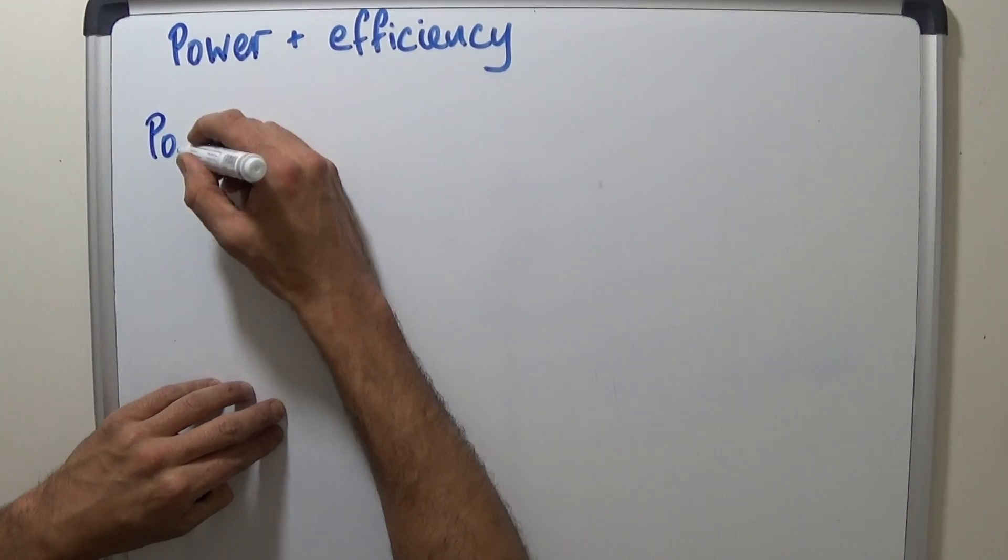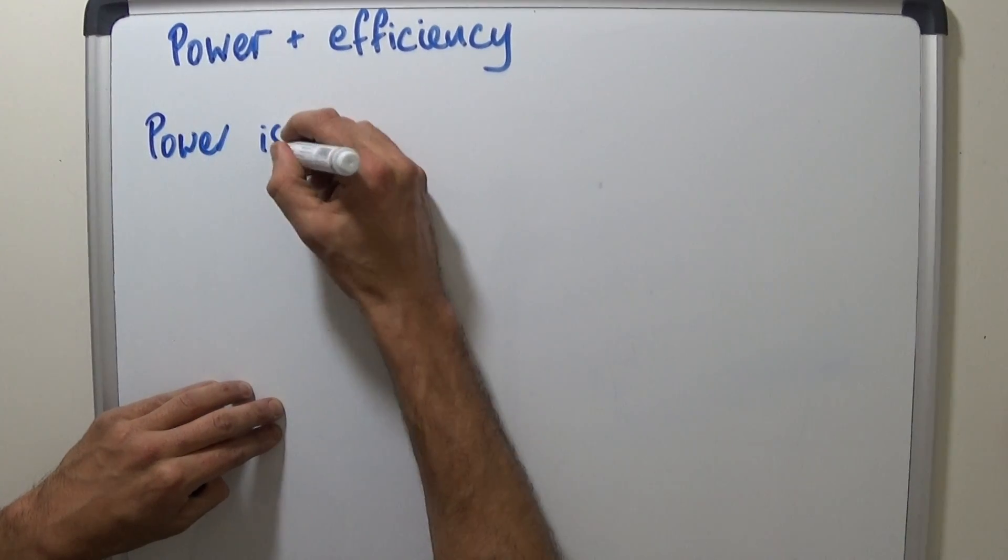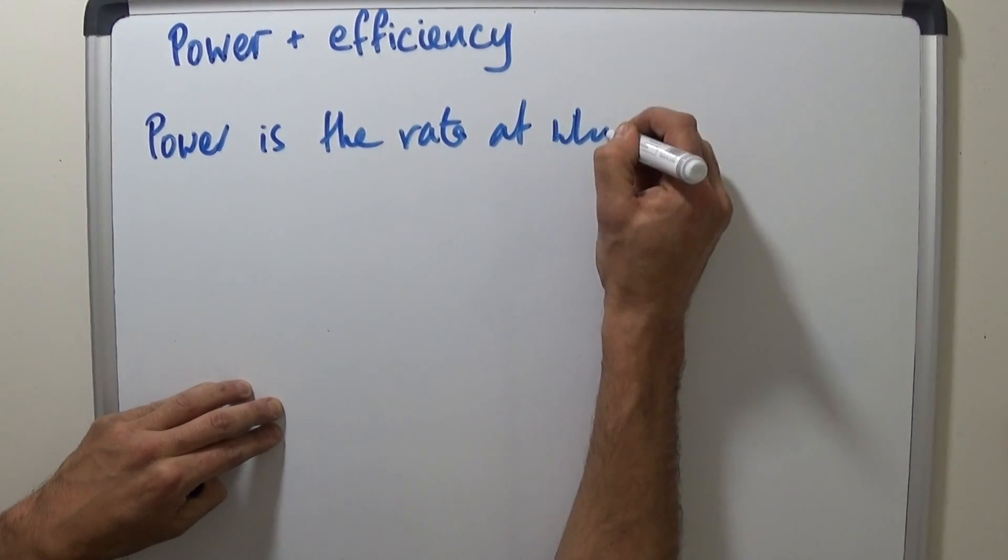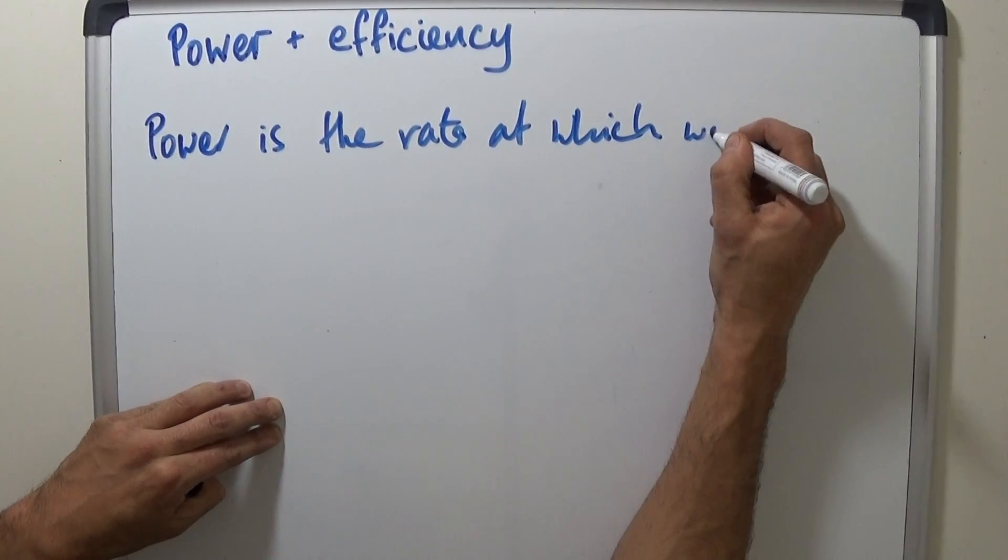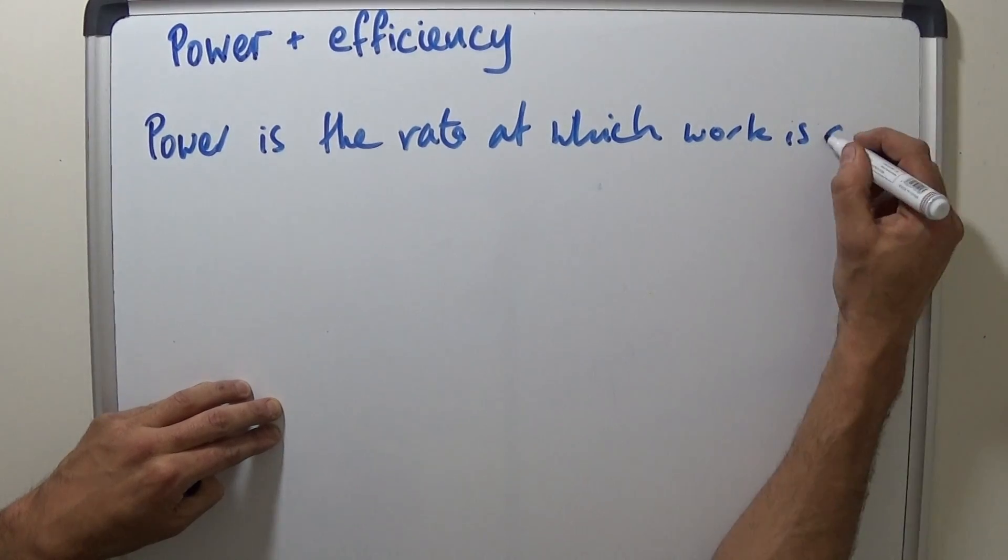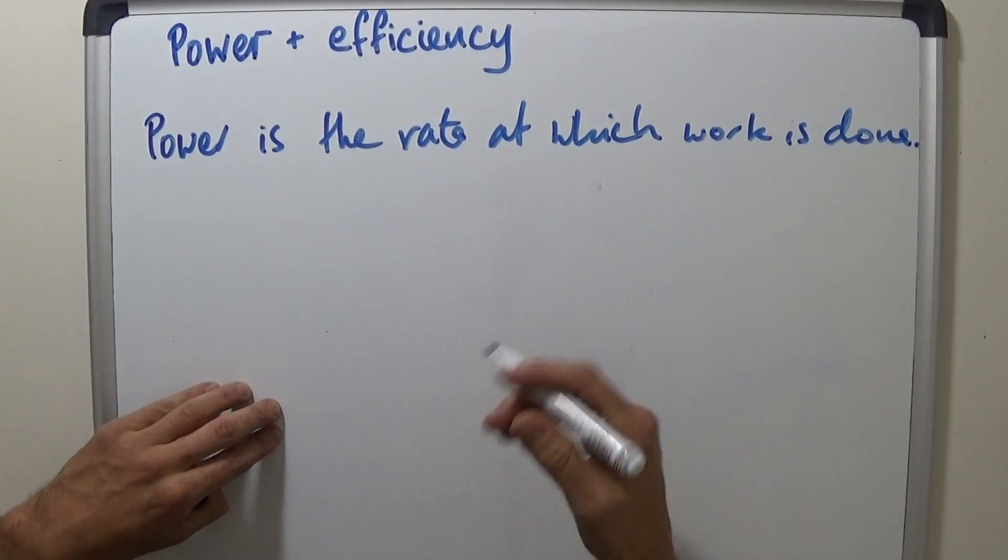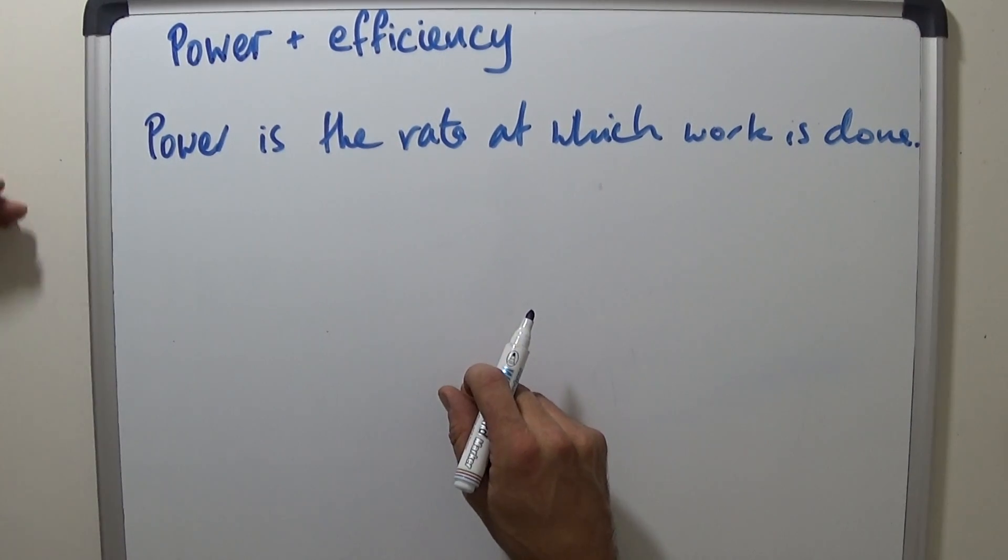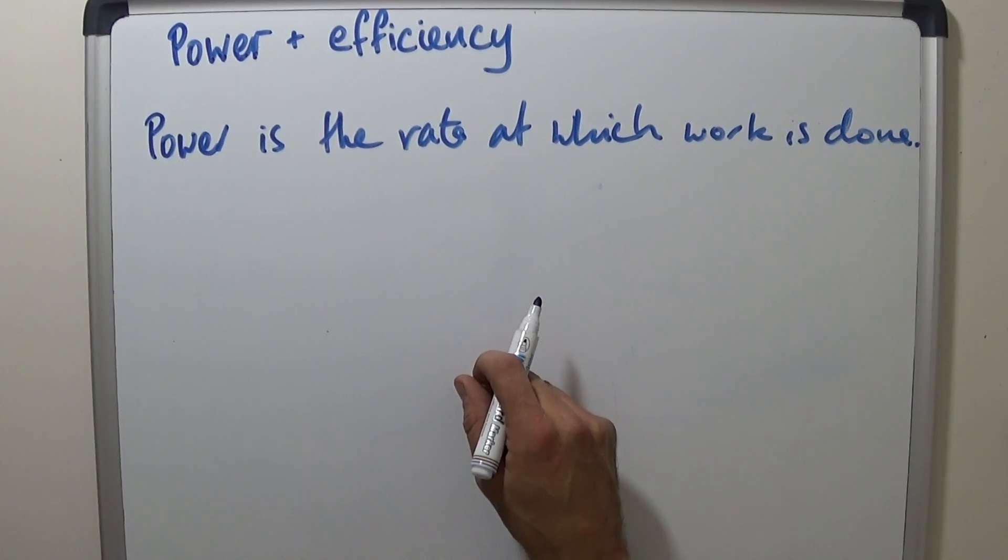Power is the rate at which work is done. And it's akin to speed. Power is to energy as speed is to distance.